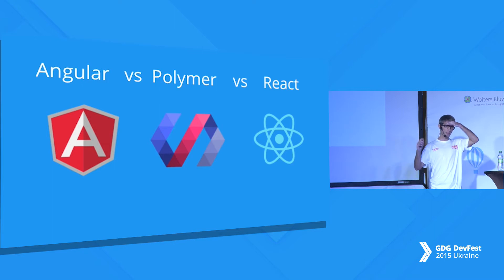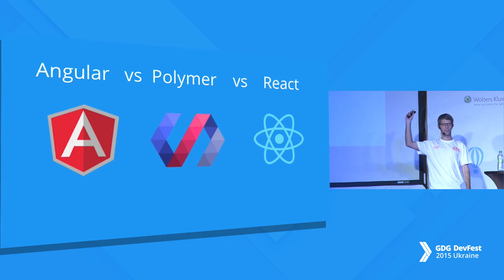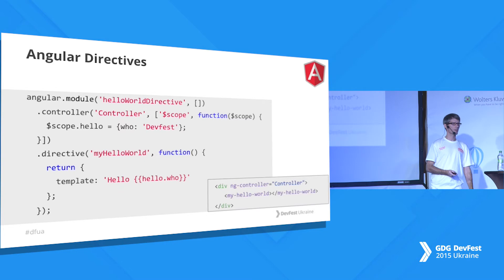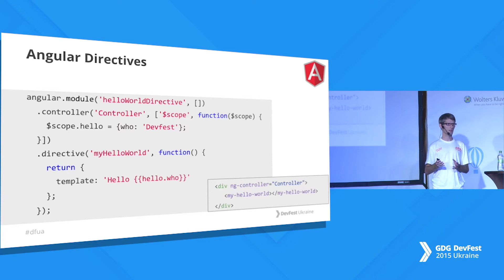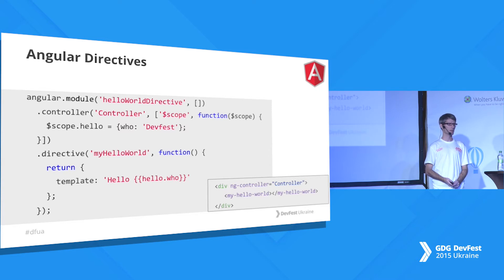If you have experience with Angular, you know there is a way to define your own elements — it's called Angular directives. You can create your own MyHelloWorld element. Angular has its own way to do this called a directive. You can specify a template for the element, and also specify a scope where you can pass variables that can be used inside the element.